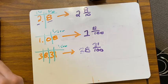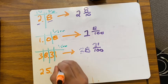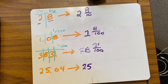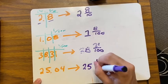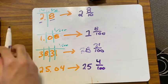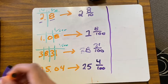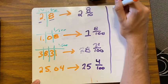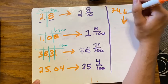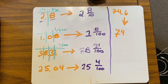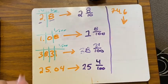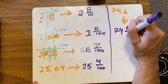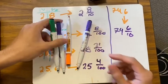Let's do one more: 25.04. Twenty-five is my whole number. Four is in my hundredths place, so I have four hundredths: 25 and four hundredths. And one final example: 74.6. Seventy-four is my whole number. My six is in the tenths place, so I have seventy-four and six tenths. And that's it — that's what you're going to be doing today.